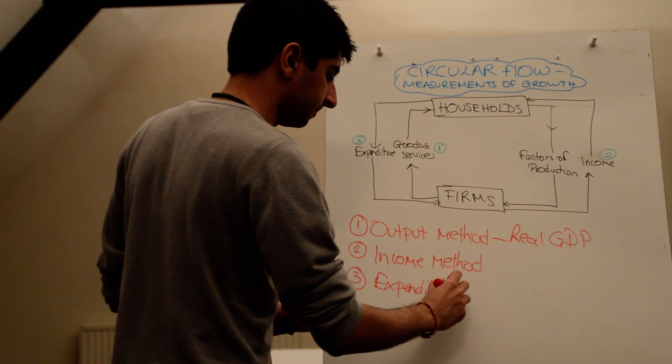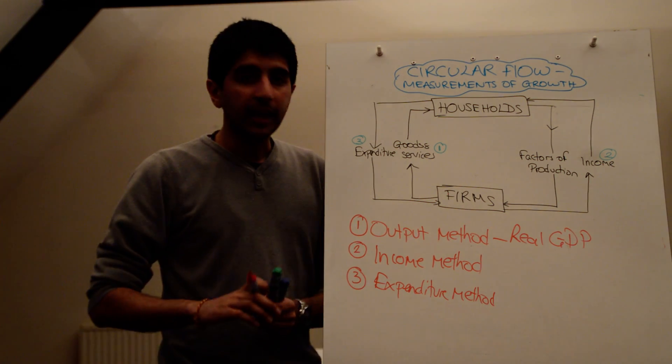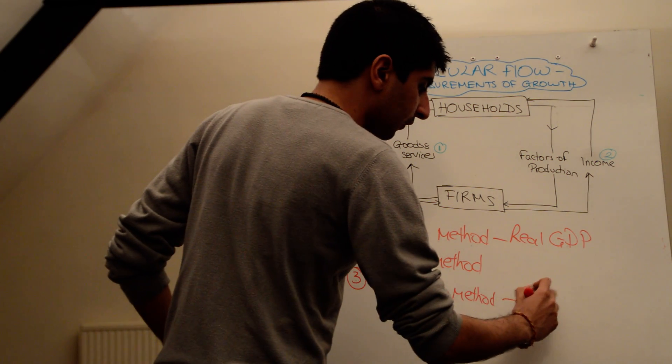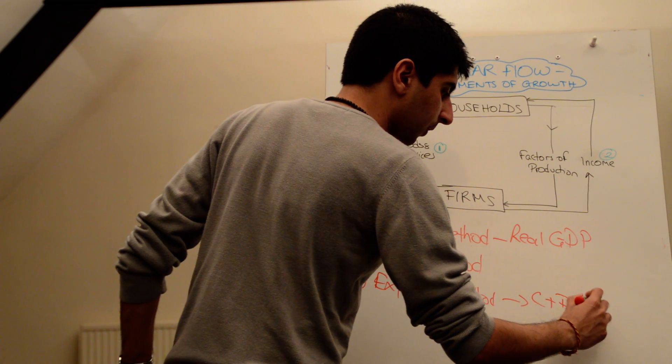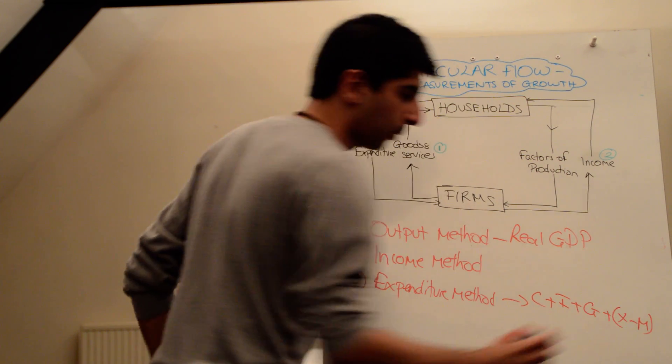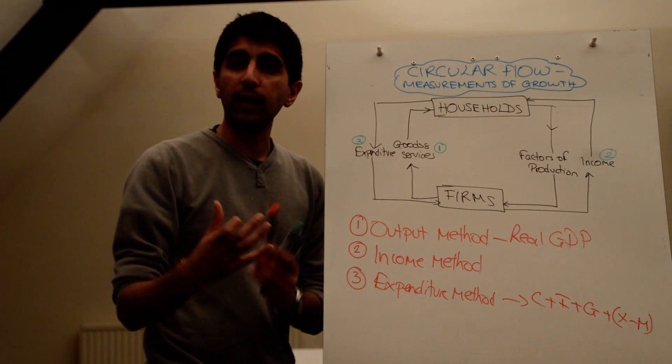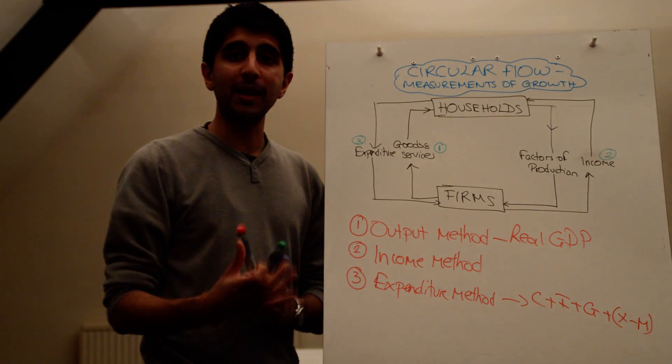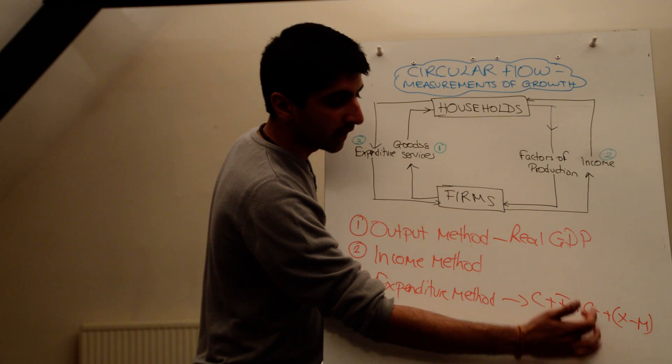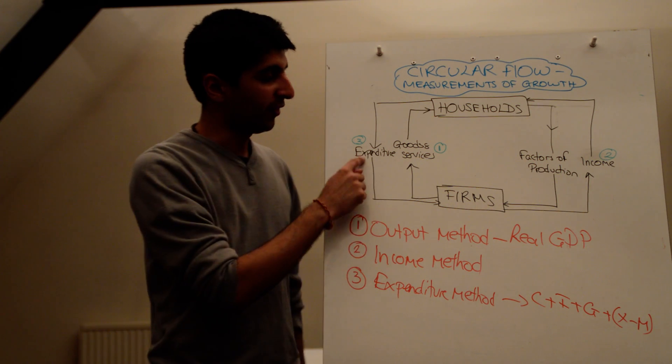You can also measure expenditure. The expenditure method. So the expenditure method includes all the leakages and consumption itself. So the expenditure method is all the different types of spending in the economy. C plus I plus G plus net export spending. Now I wonder why you've seen that before. Aggregate demand, right? So that's the expenditure method. Aggregate demand is just a measure of spending in the economy. So when you add all of these up, consumer spending, investment spending, government spending, and then export spending, you get an idea of total expenditure in the economy, this part of the flow.